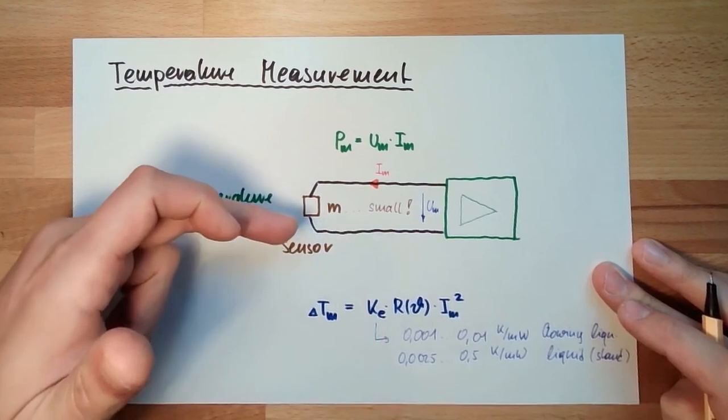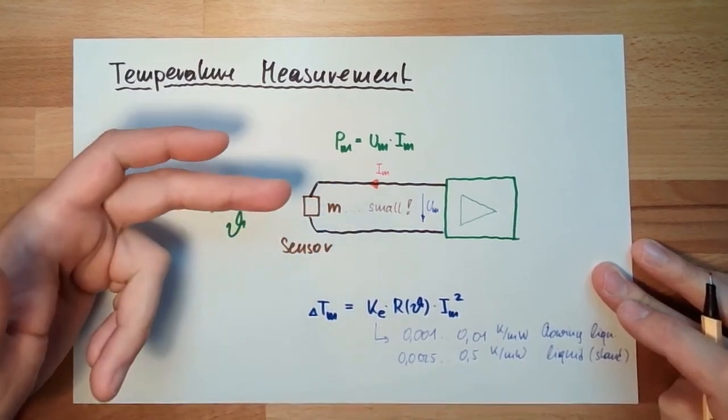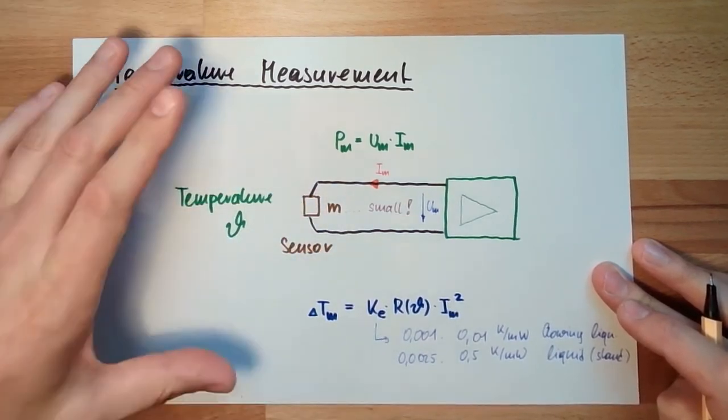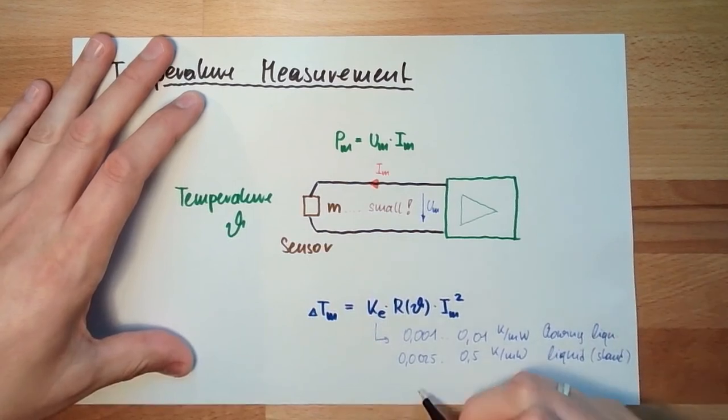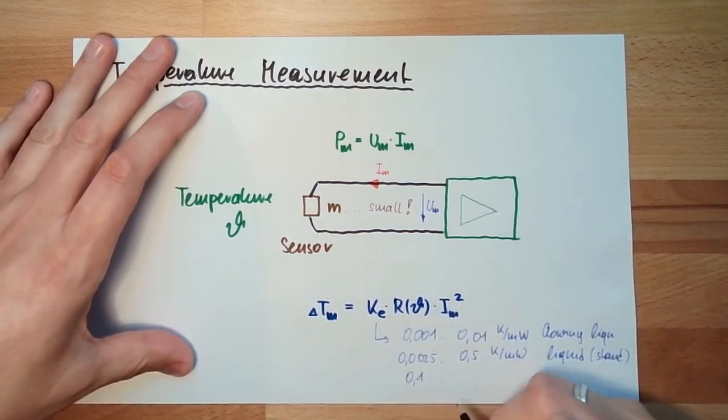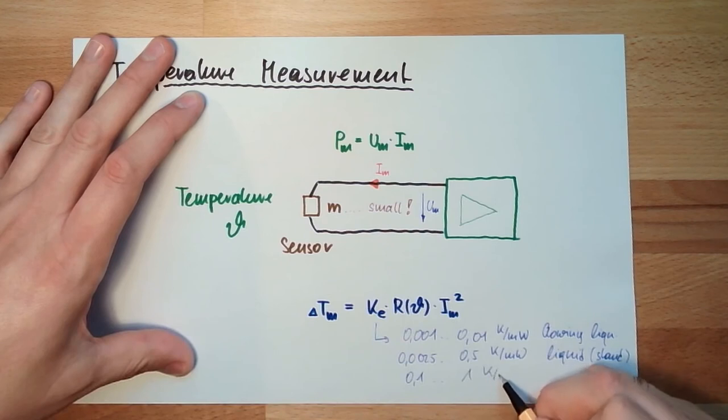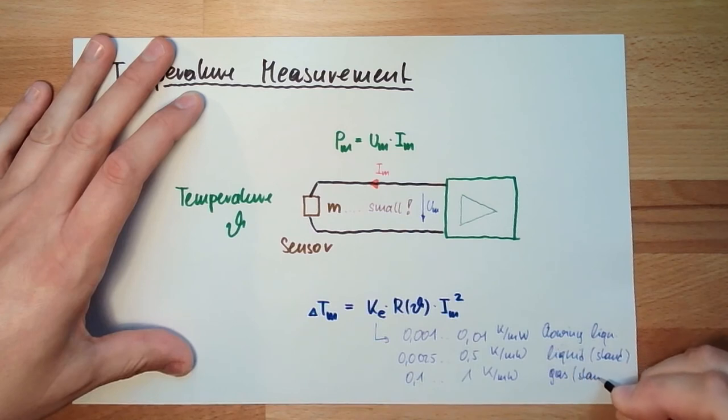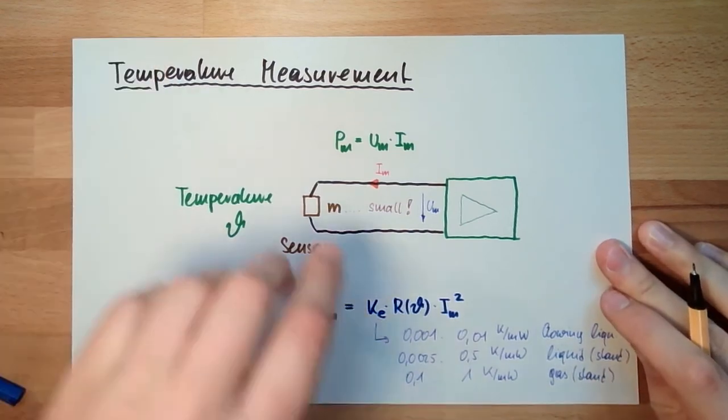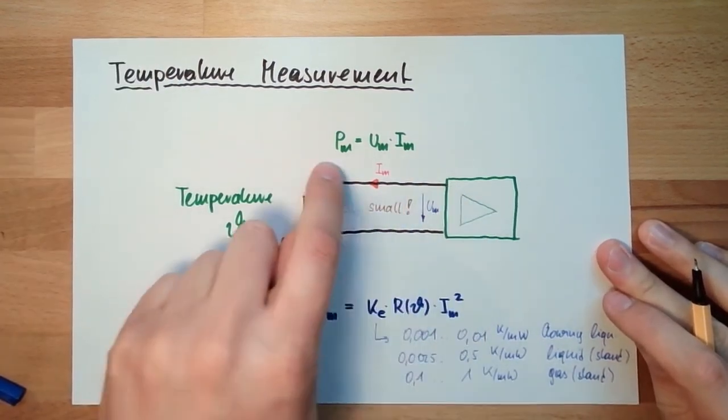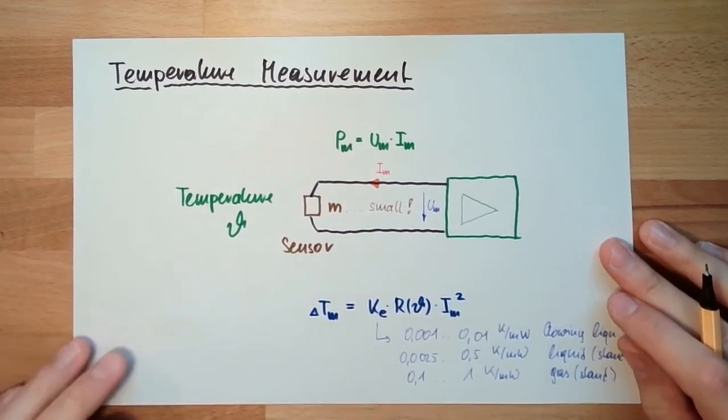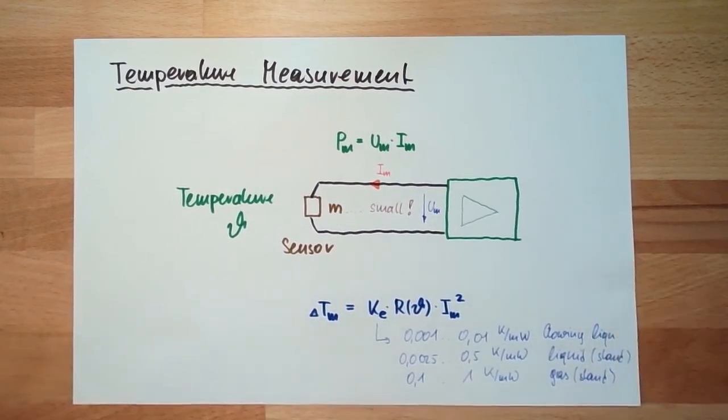And the worst case, of course, is if there is air and this air is not moving or some gas, let's say. Then we are at 0.1 up to, let's say, one Kelvin by milliwatt. So this is gas standstill. One Kelvin by milliwatt. There is only one milliwatt of power and we are way already one Kelvin.